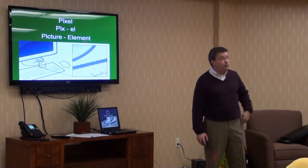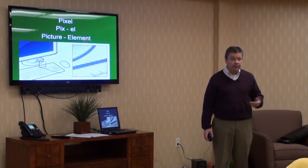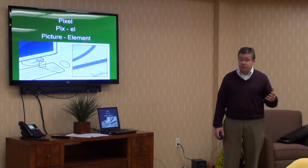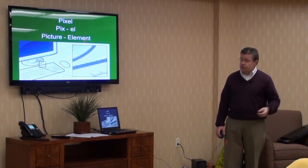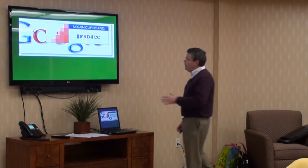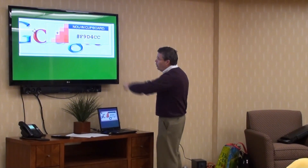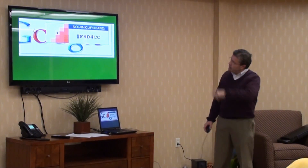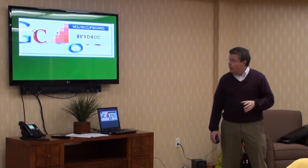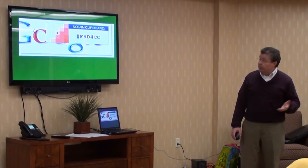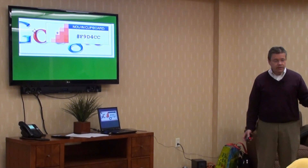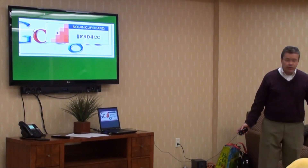Each one of those is a pixel, or a picture element. Just like the child reads the instructions, the computer has instructions in code. The highlighted little square there is one pixel, and the computer simply fills the appropriate color based on the code that it was instructed to fill that little square in with. The process is really, really simple.